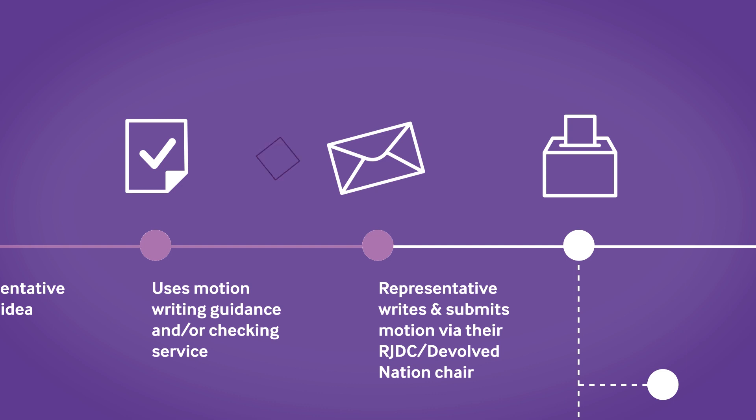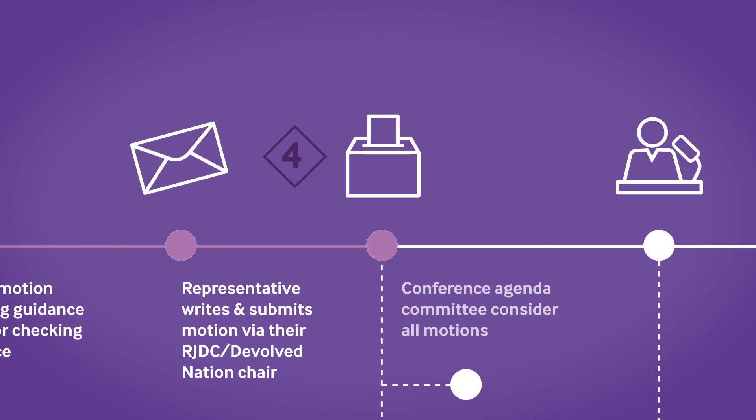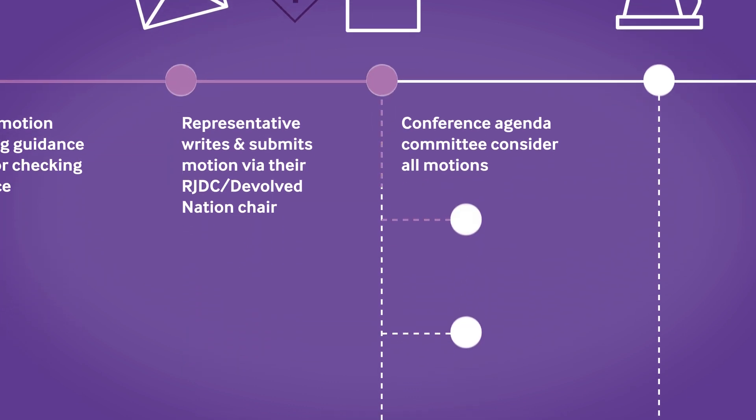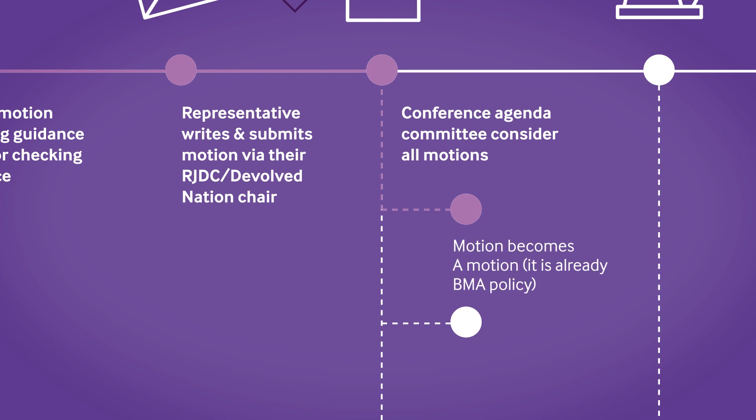The conference agenda committee is a group of elected members whose primary role is to ensure that the conference agenda is topical and stimulating, and that the motions received from the regional and national committees are considered for the agenda. For motions not directly included to be debated at the conference, they may fall under one of three categories. Category one: motions that already reflect current BMA policy.